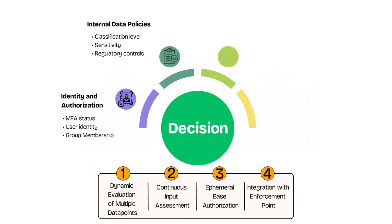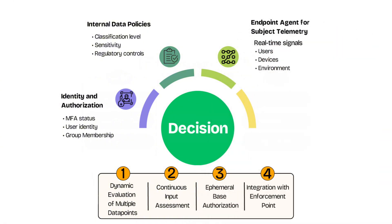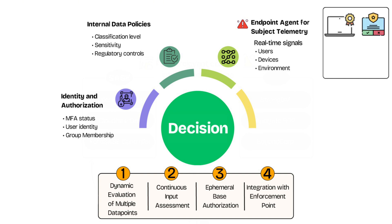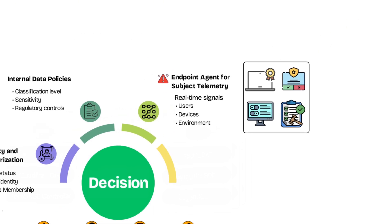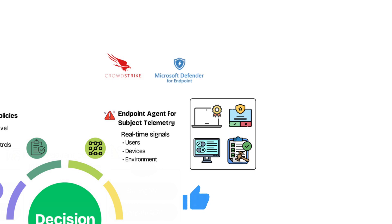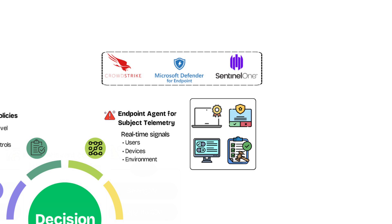The real power of zero trust lies in the decision point's ability to ingest real-time signals that reflect the current state of users, devices, and surrounding environments. That's why it's essential for any solution to understand telemetry from the endpoint — the very device a user is connecting from. Endpoint tools or agents provide critical data points such as device certificates, security posture, operating system health, threat activity, and overall compliance status. Endpoint platforms like CrowdStrike Falcon, Microsoft Defender, and SentinelOne are examples of endpoint security clients that can feed this information directly into the decision point to support dynamic, context-aware access decisions.